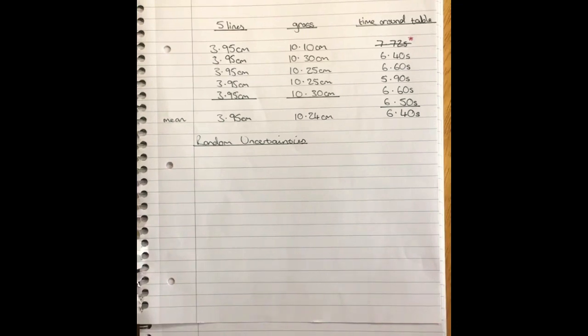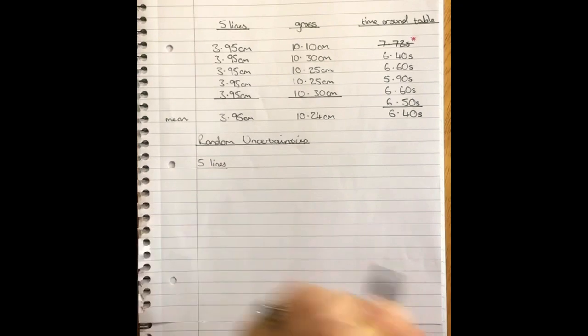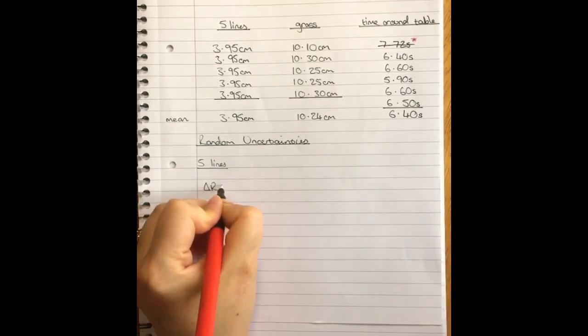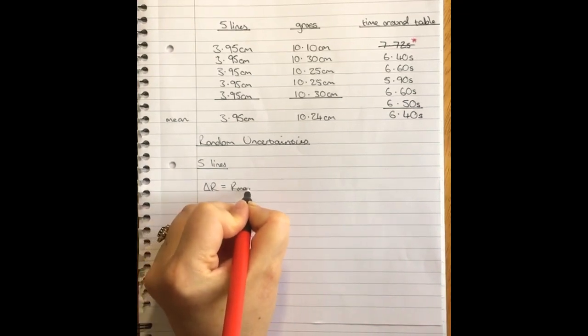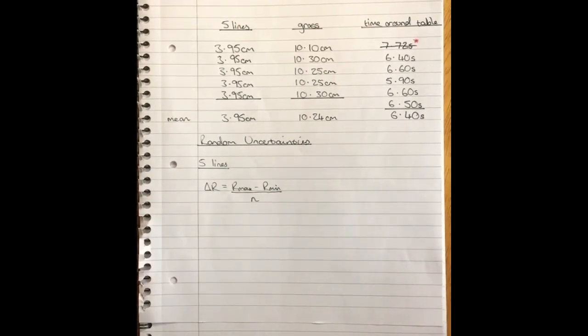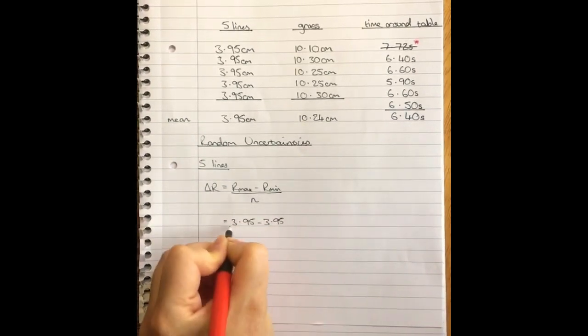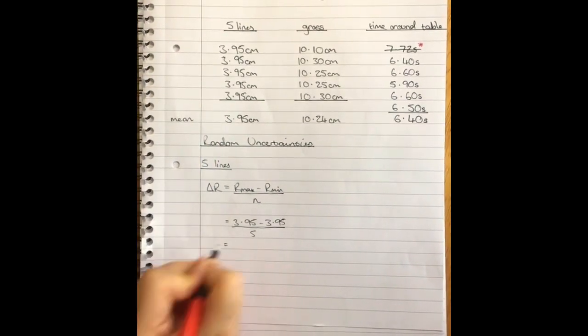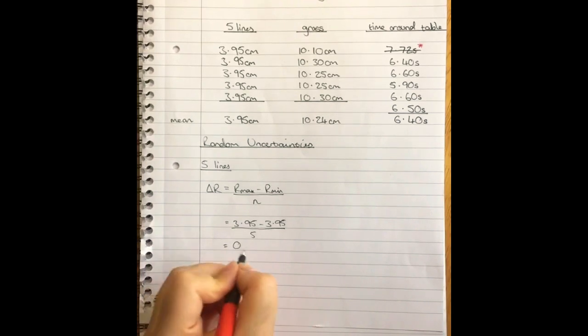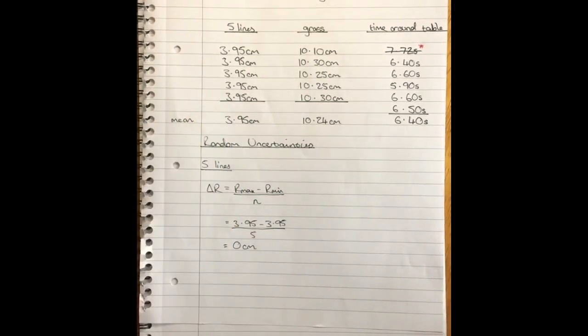So let's do our random uncertainties for all three of our repeated measurements. So for our five lines it's going to be pretty easy. Delta R random uncertainty is equal to our maximum value minus our minimum value over the number of values. So that is, I'm just going to go through with it, 3.95 minus 3.95 over five different repetitions. So n is the number of repetitions and that is of course zero centimeters. So there is zero random uncertainty in that measurement. So obviously the biggest uncertainty in that measurement is the reading uncertainty.